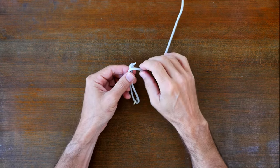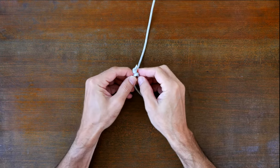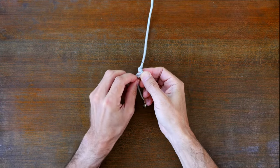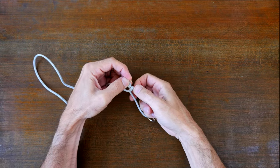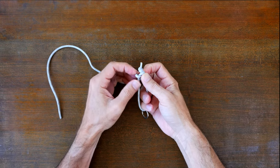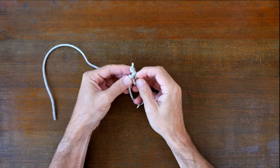The fishtail paracord weave is tied by passing the left strand over the right strand and then through the center. Then continue the weave by wrapping the left strand around the left side and again back through the center.